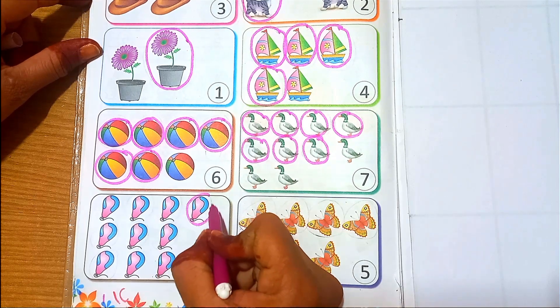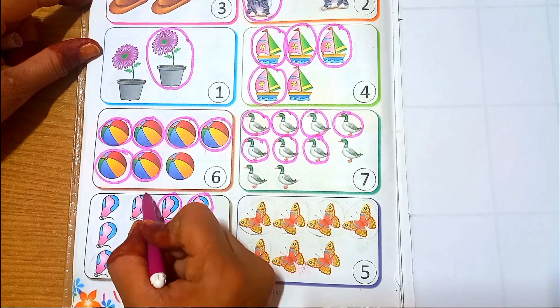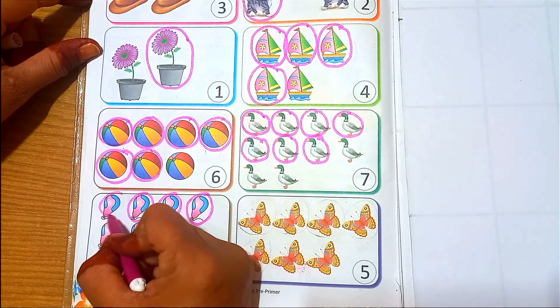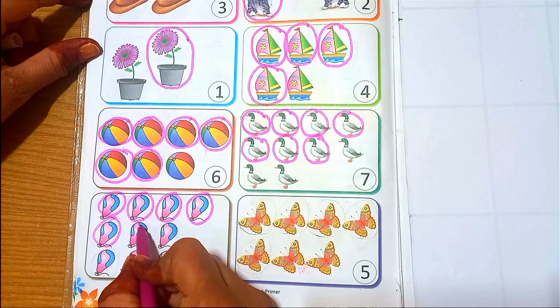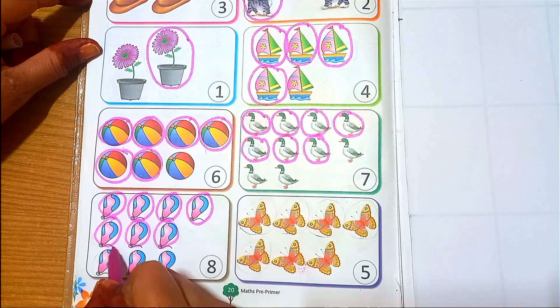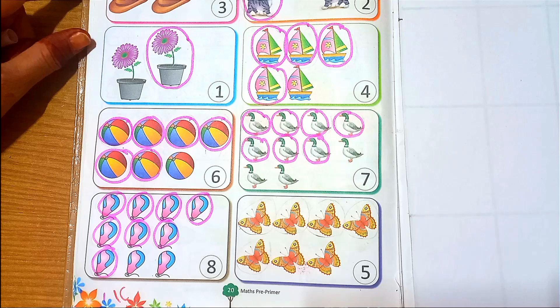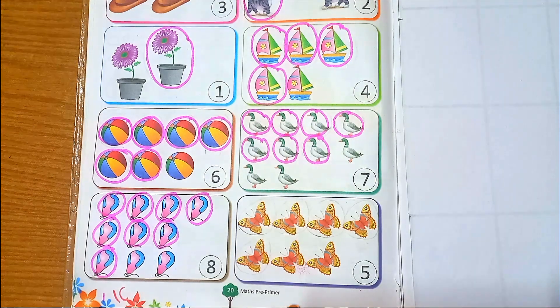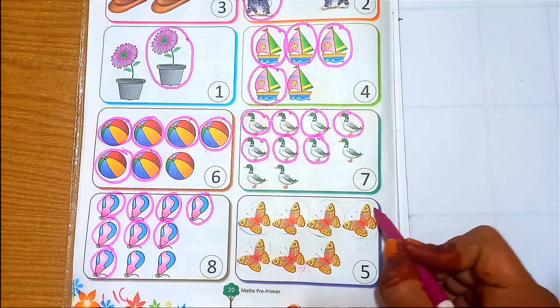One, two, three, four, five, six, seven, and eight balloons. And next we have kites, let's count and circle.